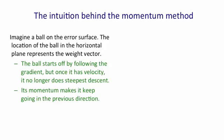The ball starts off stationary, and so initially it will follow the direction of steepest descent. It will follow the gradient. But as soon as it's got some velocity, it will no longer go in the same direction as the gradient. Its momentum will make it keep going in the previous direction.